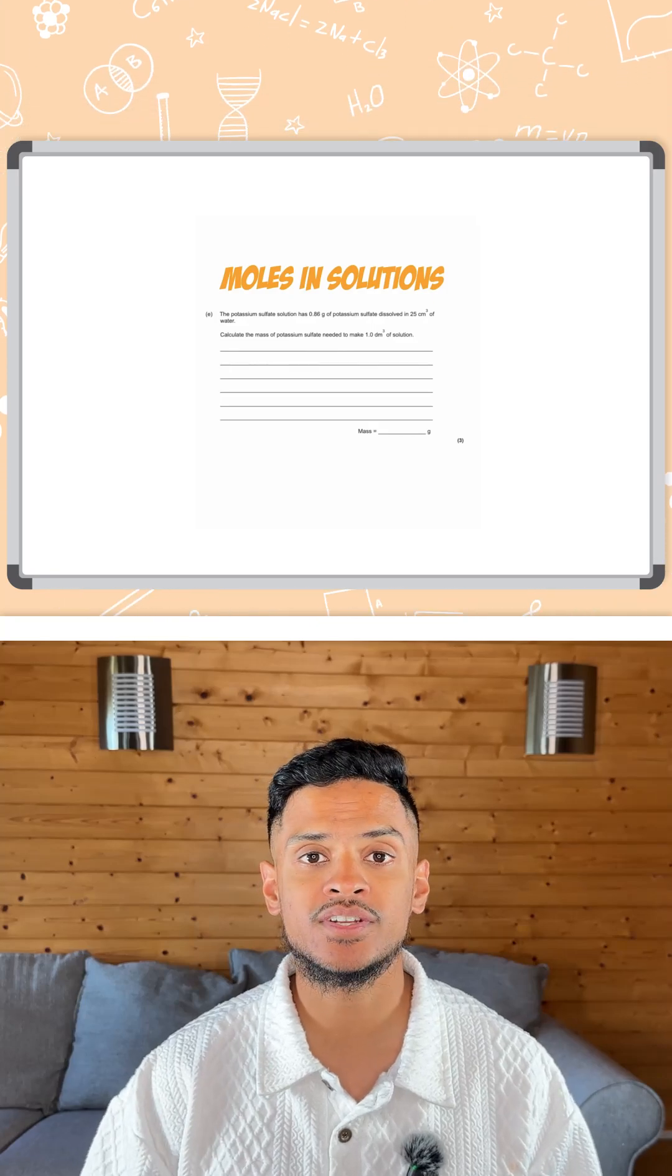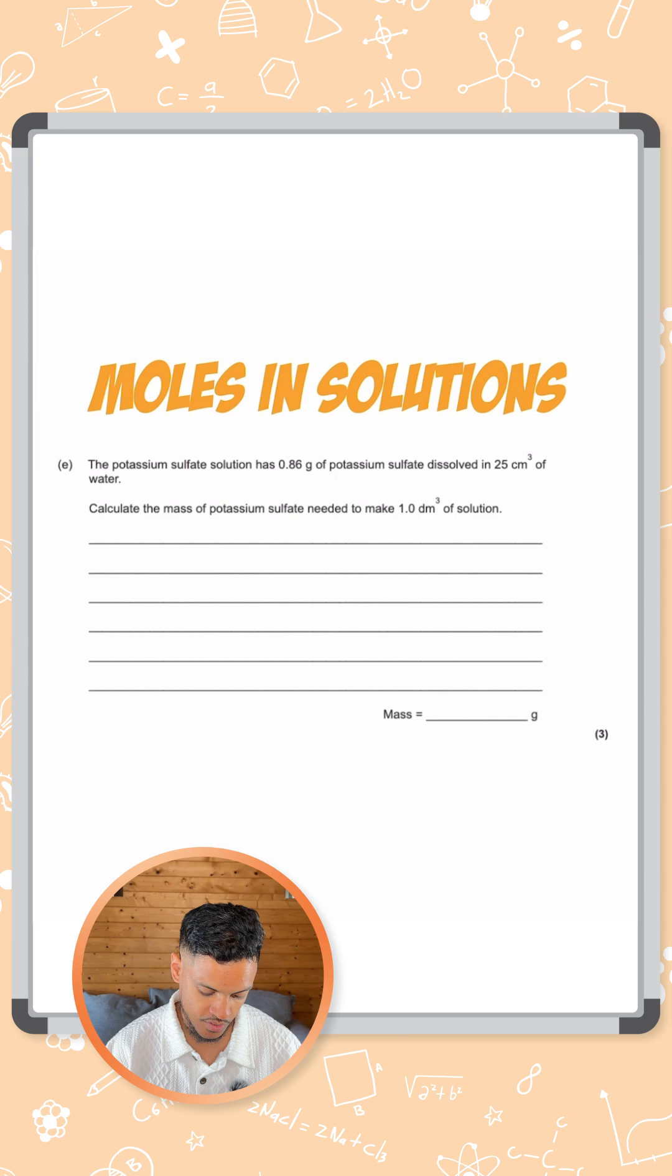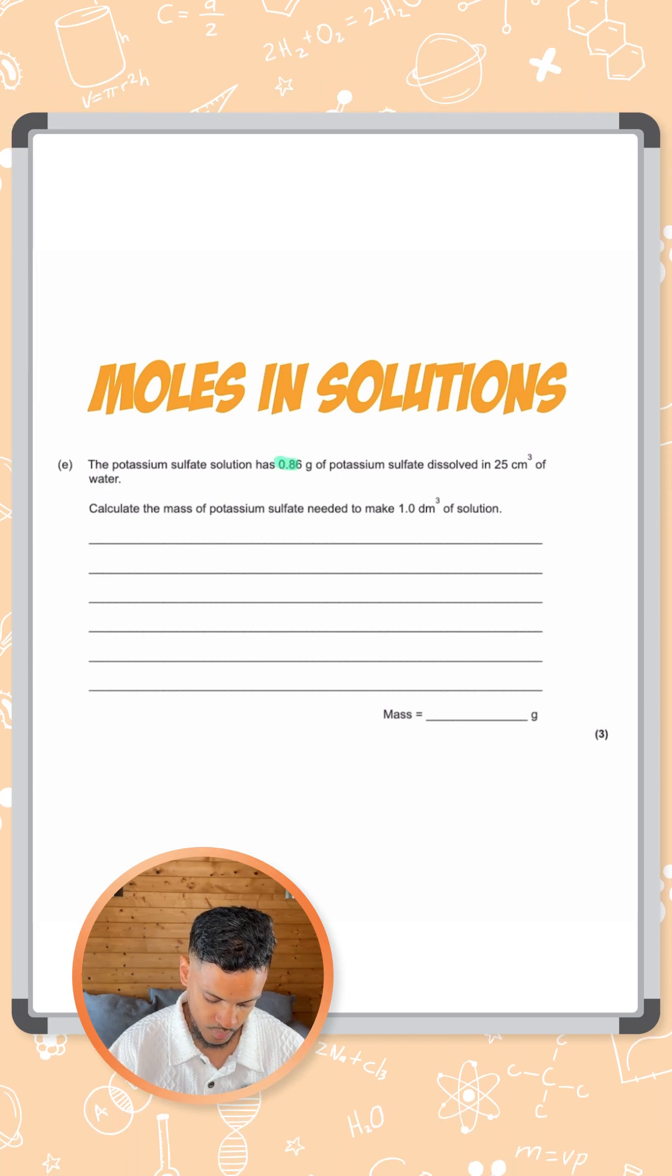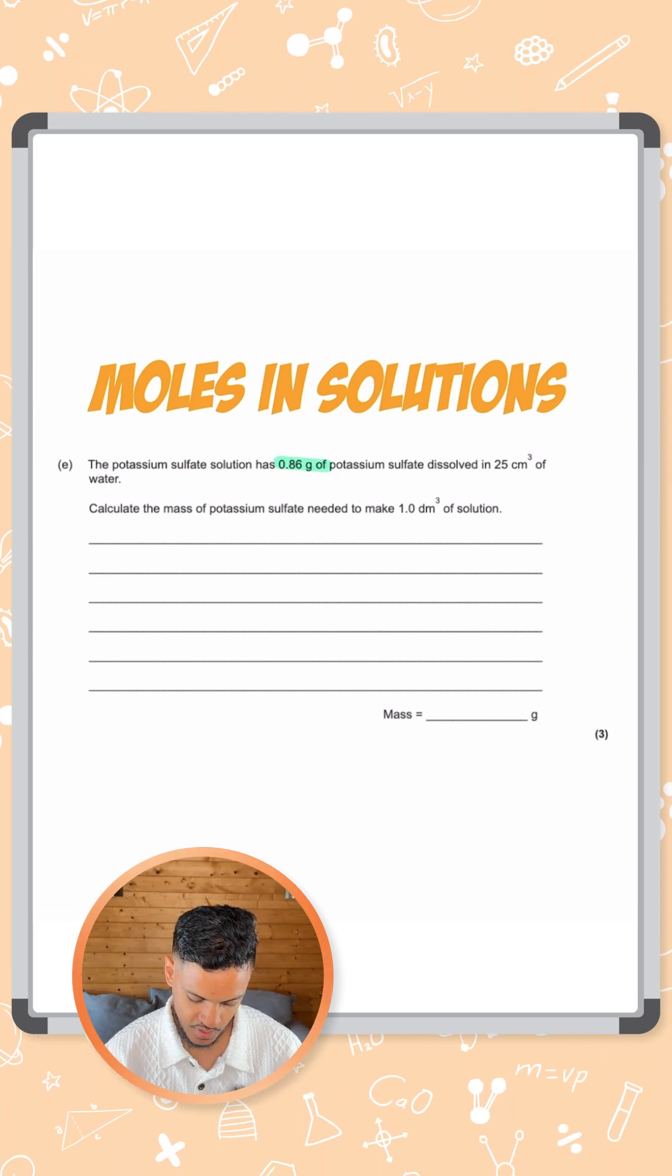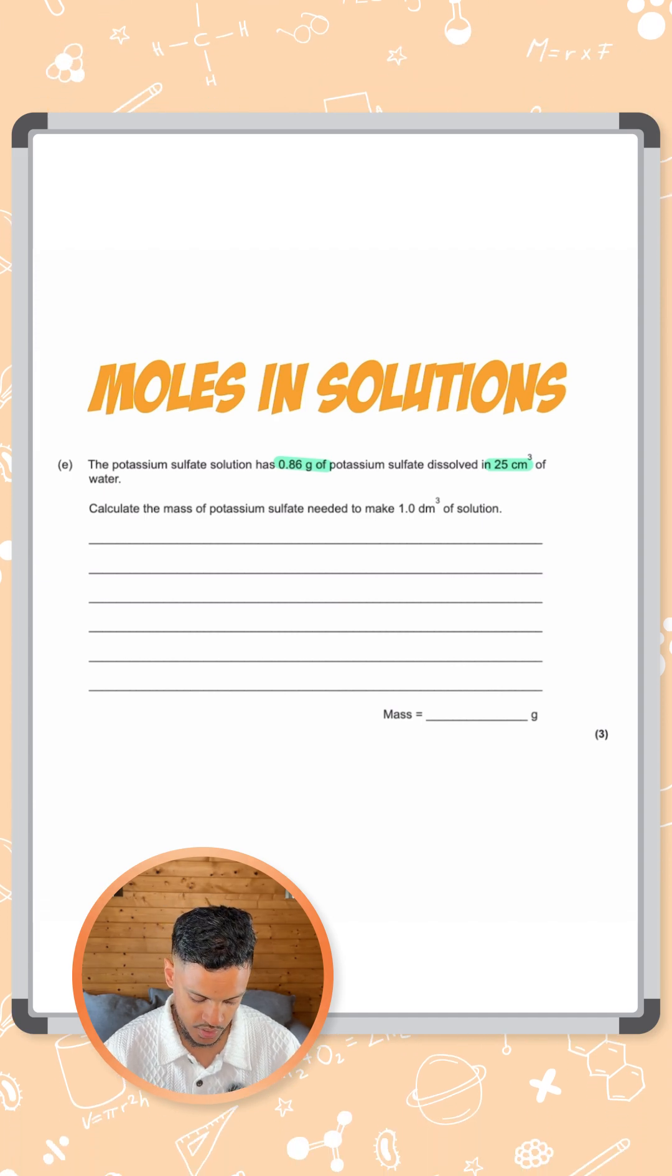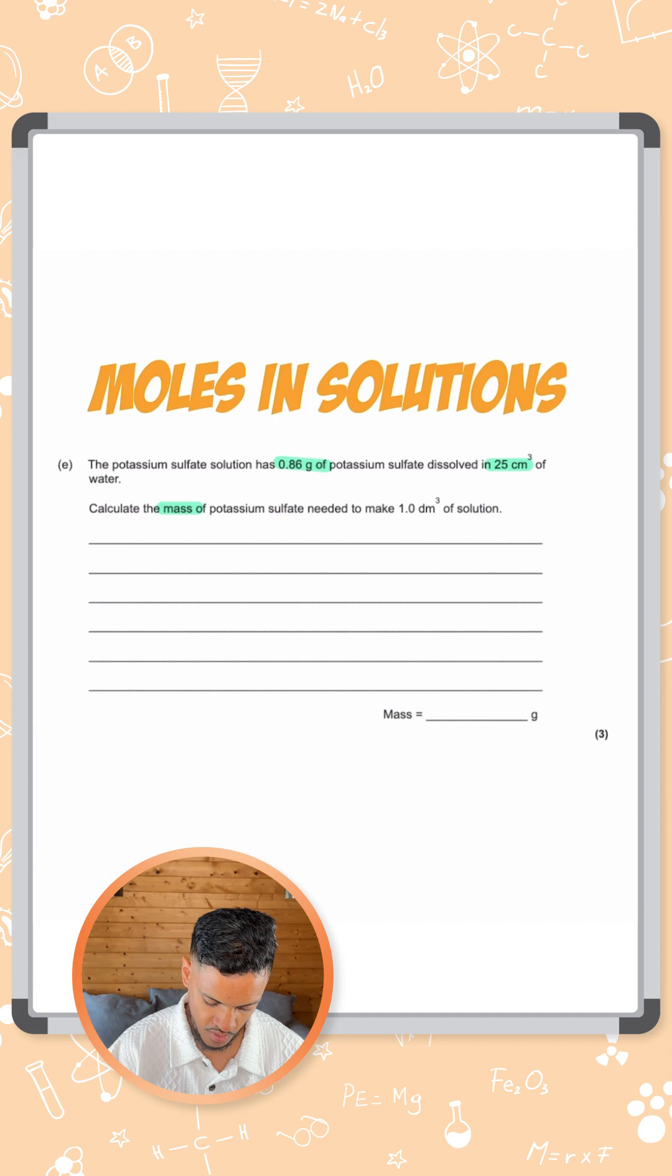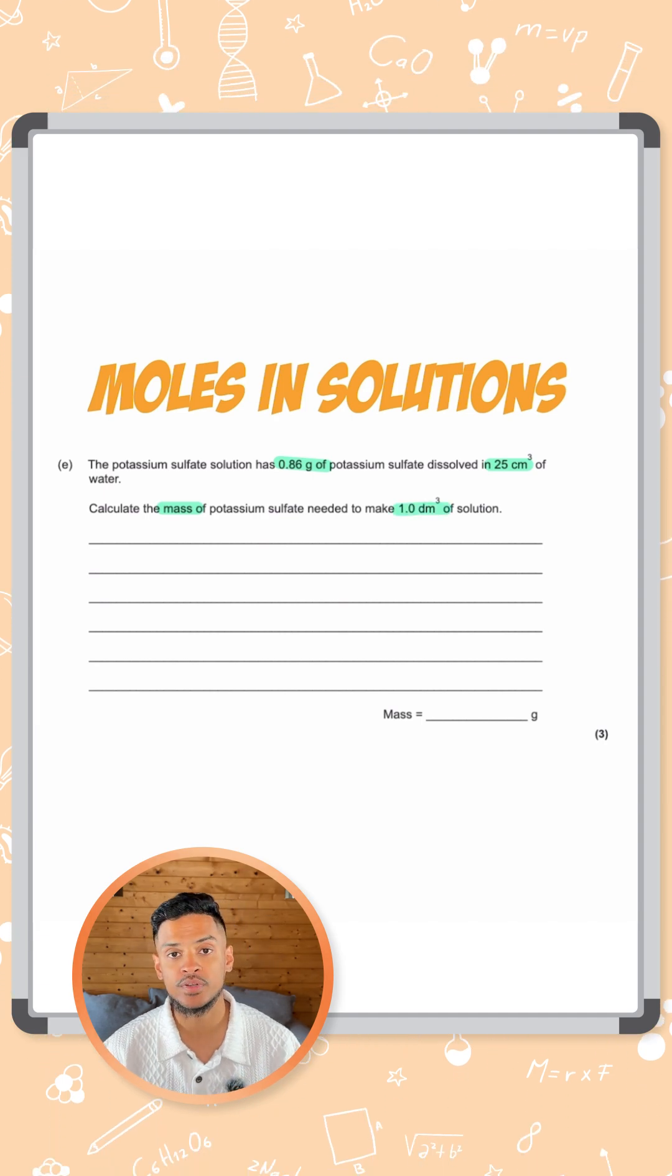Okay, so let's look at a mole calculation involving solutions. Here it says the potassium sulfate solution has 0.86 grams of potassium sulfate dissolved in 25 centimeters cubed of water. Calculate the mass of potassium sulfate needed to make a 1 dm cubed solution.